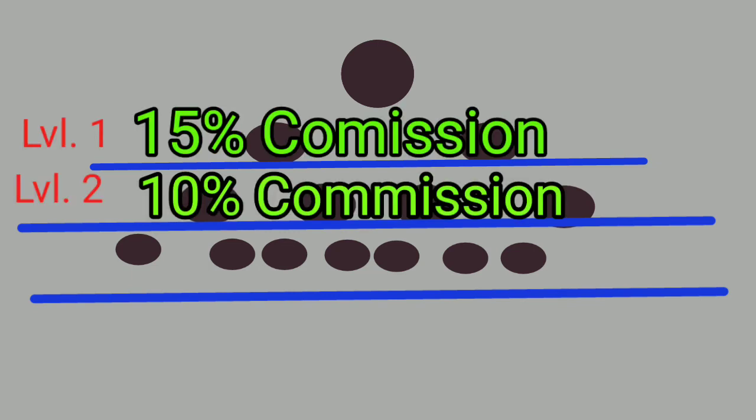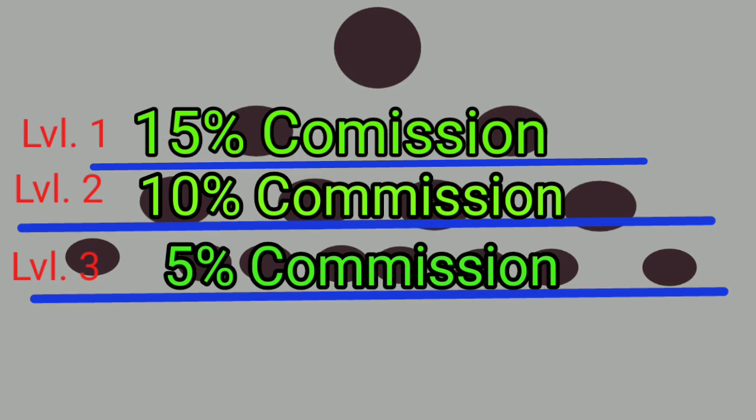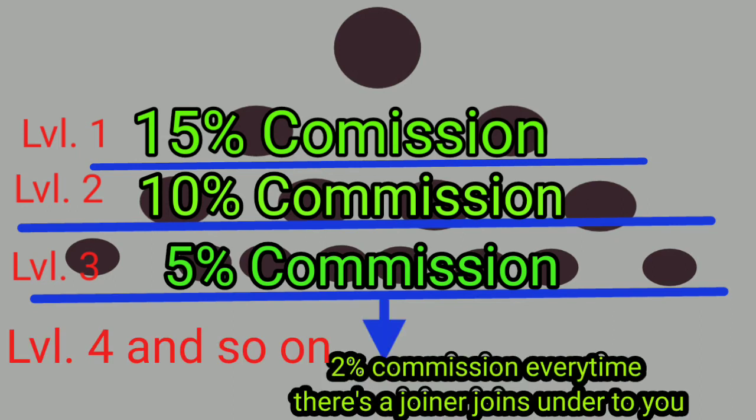First, level 1 has 15% commission. Level 2 has 10% commission. Level 3 has 5% commission. Level 4 and so on have 2% commission every time a joiner joins the network under you.